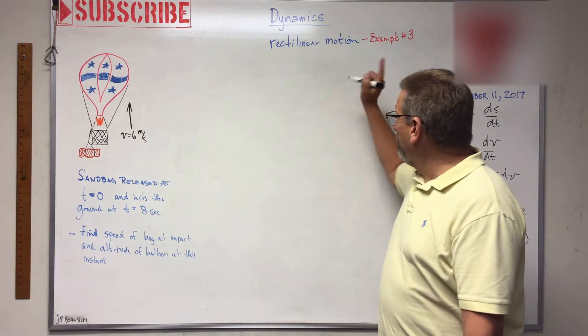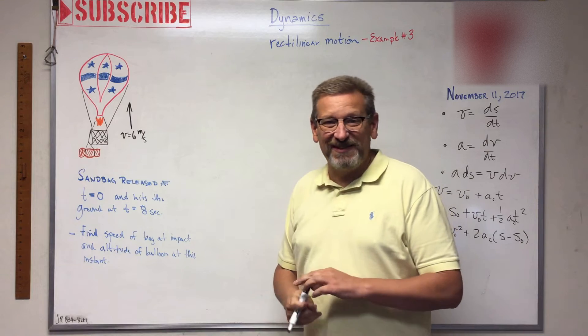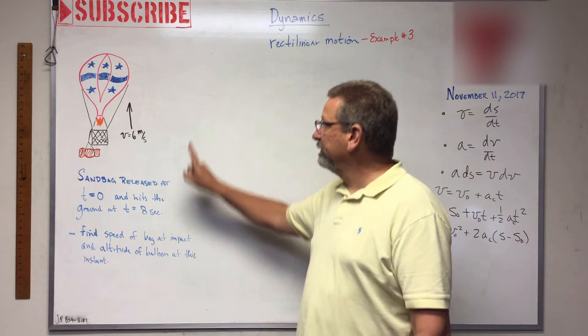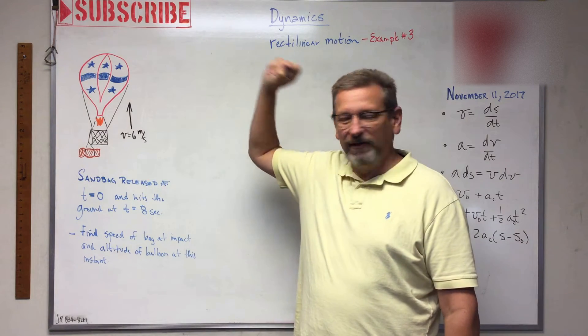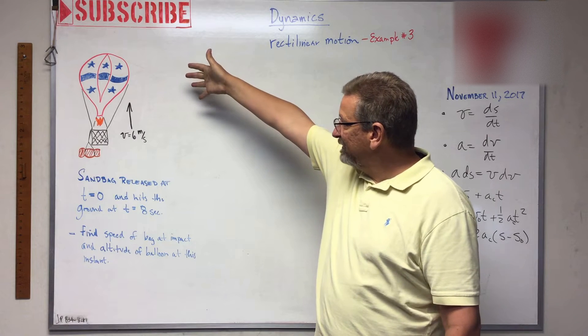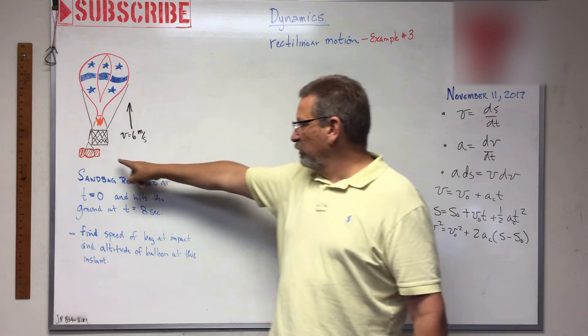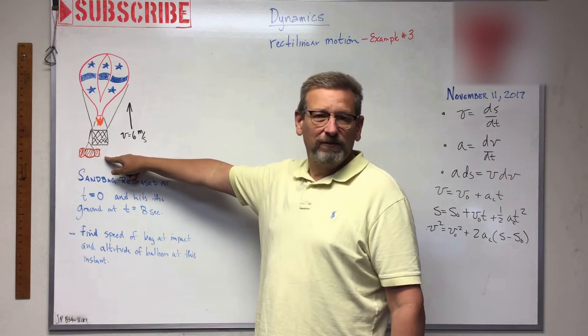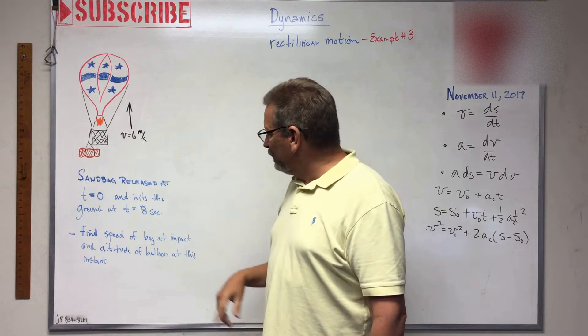Okay, welcome back. Example problem number three: rectilinear motion. But this time our straight line is that way, straight up, positive y. We've got this fantastic balloon with the world's biggest Tootsie Roll - no, it's a sandbag attached to it, and we're going to release that sandbag.